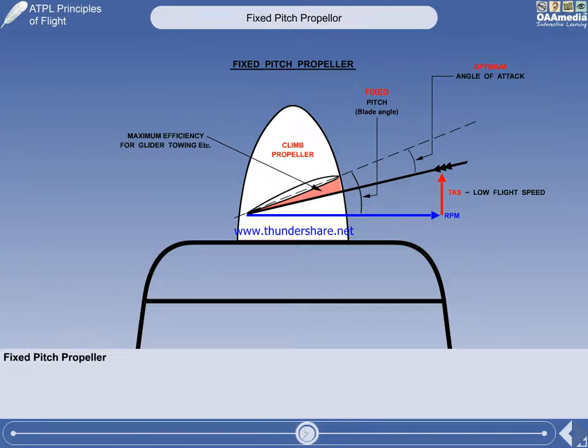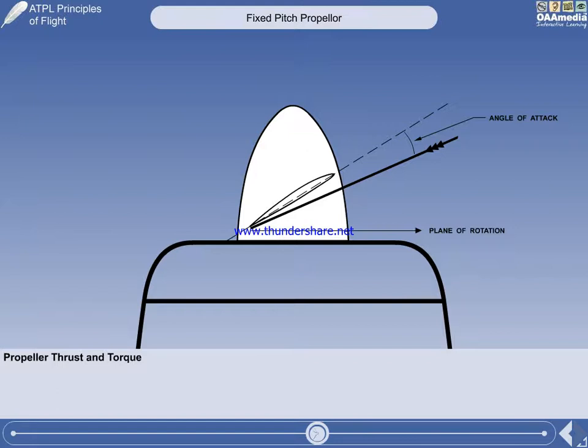We'll now take a look at the forces of thrust and torque and how they act on the aircraft. Here we can see a propeller blade with its angle of attack and the plane of rotation. The thrust acts forwards at right angles to the plane of rotation and torque acts parallel to and in the opposite direction to propeller rotation.